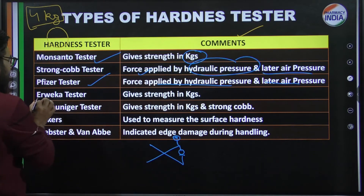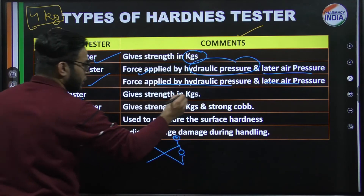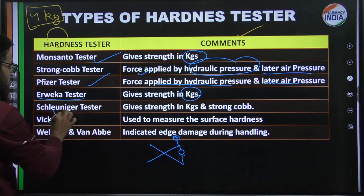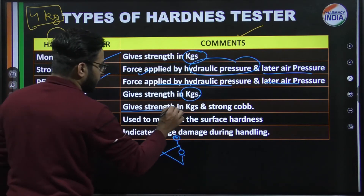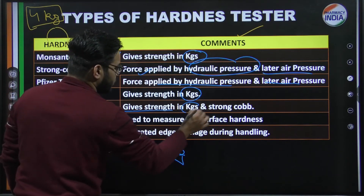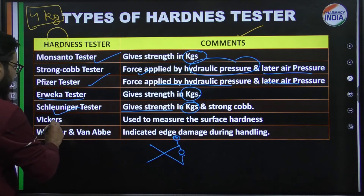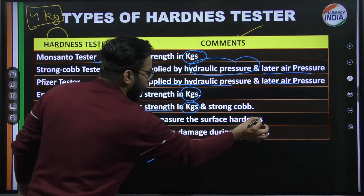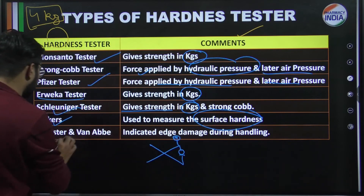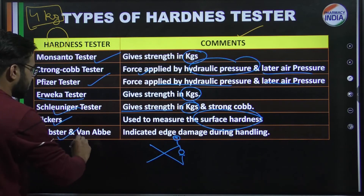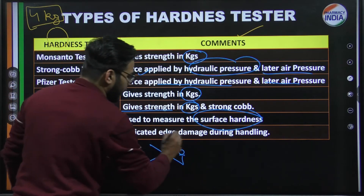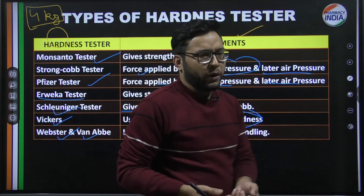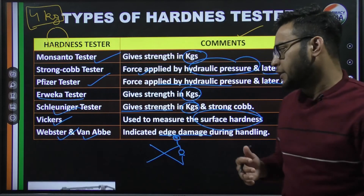Next is the Erweka tester — it also gives strength in kg. After that is Vickers, which measures surface hardness. Then comes Webster, which is mainly used when there is edge damage during handling — when you handle tablets, there are chances of edge damage.